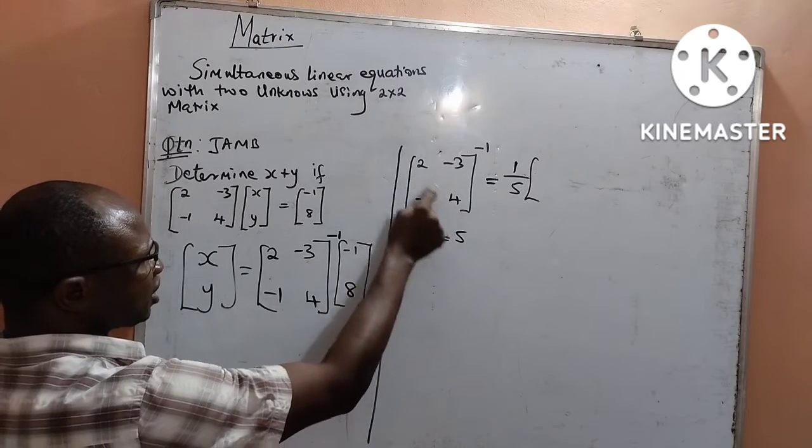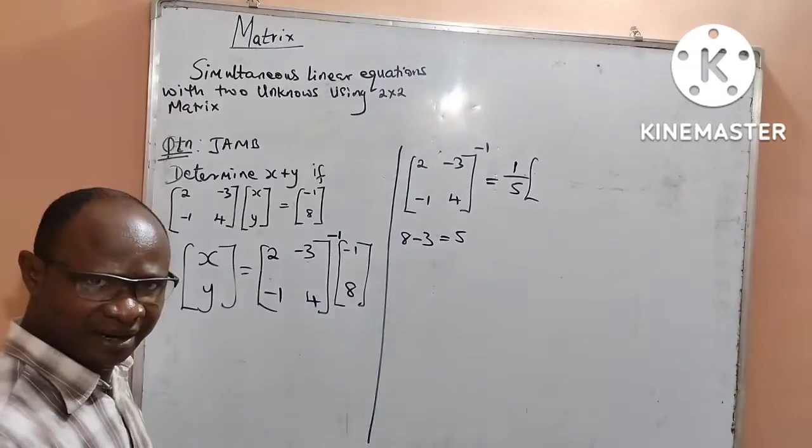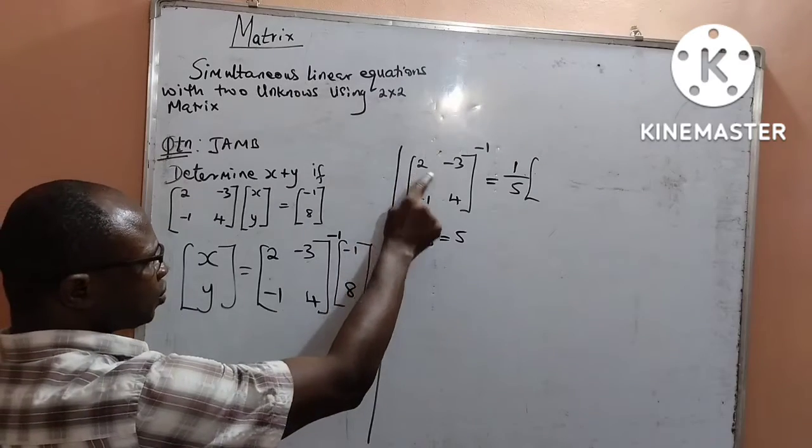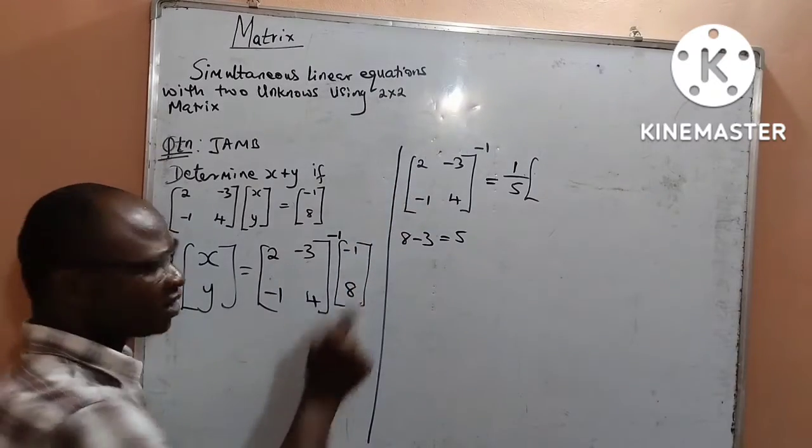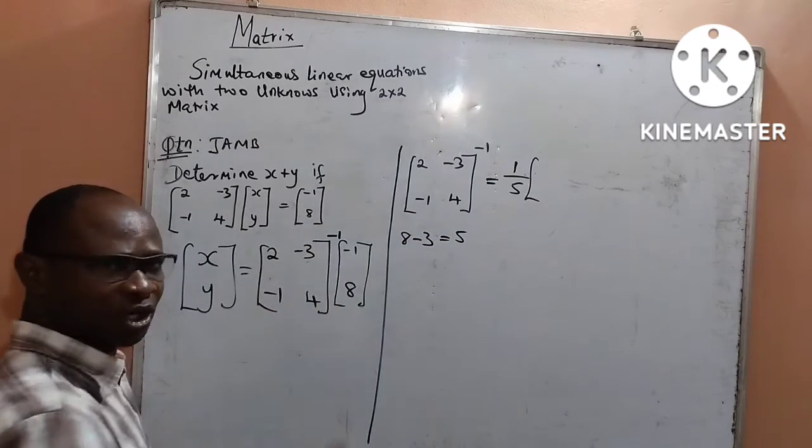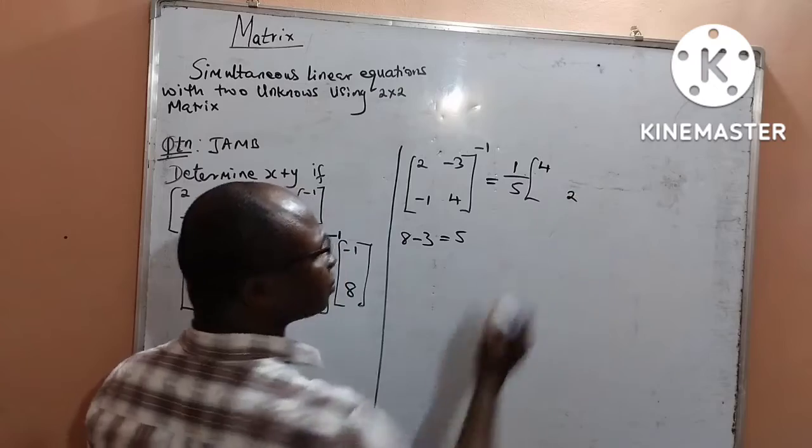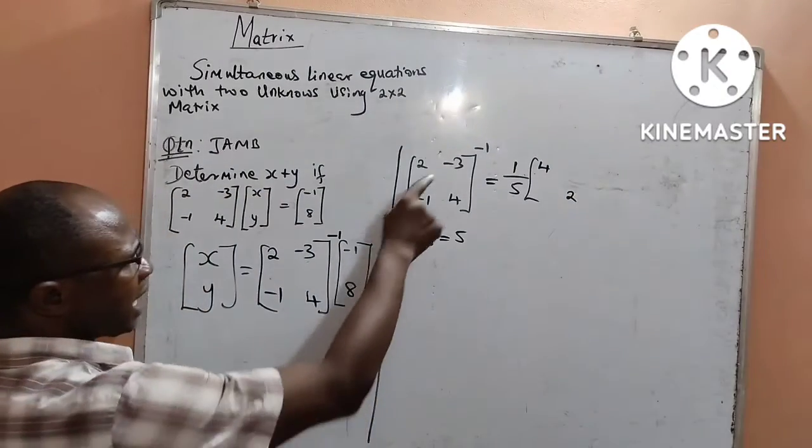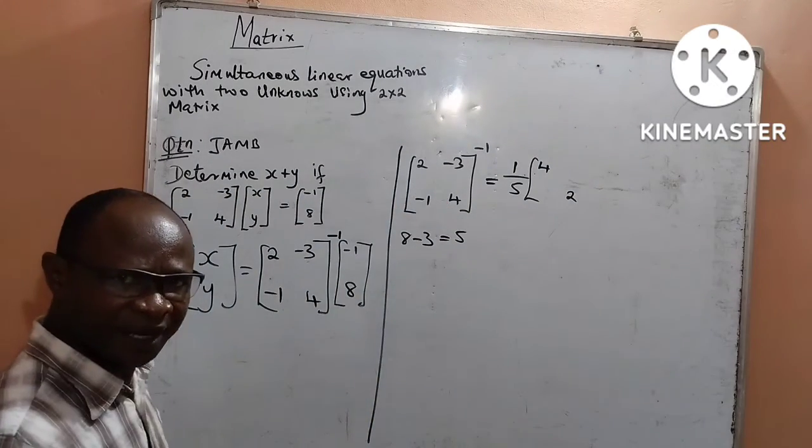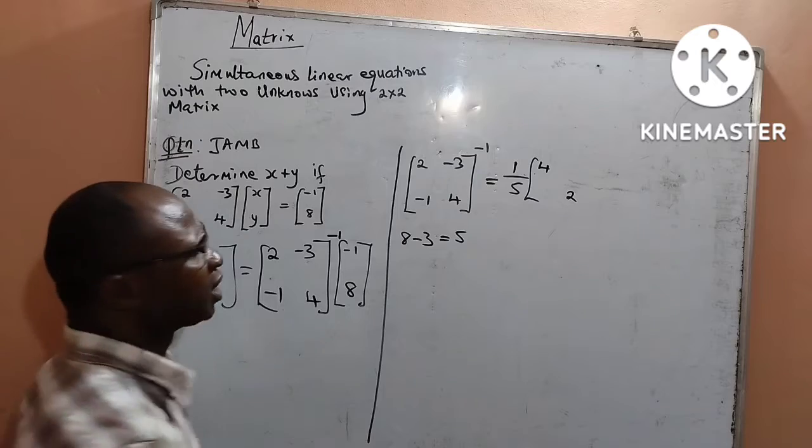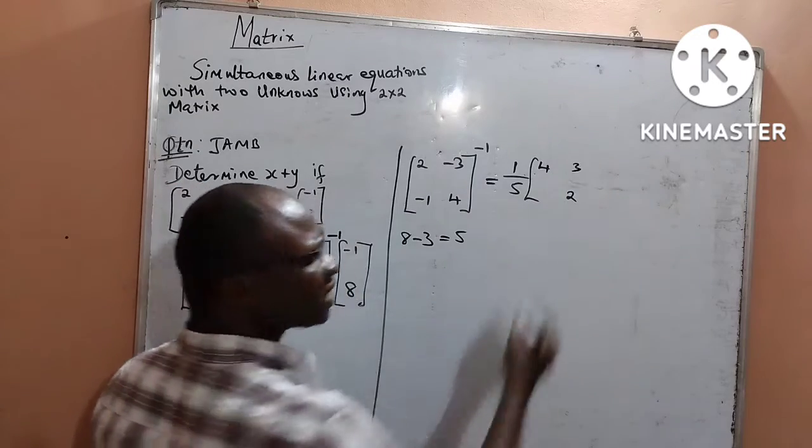I will change the positions of this leading diagonal, the elements. 2, we move to position of 4 and 4, we move to position of 2. And that will now give me [4, 2]. Next, I will multiply this negative 3 by negative 1 to get positive 3.